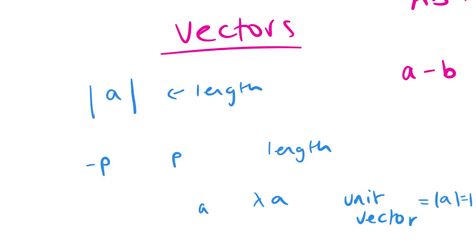The triangle law for addition: AB + BC gives us vector AC. When we subtract vectors, it's the same as adding the negative — so vector A minus vector B is A plus the negative of B. Adding opposite vectors gives a zero vector: vector AB plus vector BA equals zero. Multiplication and addition: if we have vectors (2, 1) and (3, 0), the dot product is 2×3 + 1×0 = 6. For addition, (2,1) + (3,0) = (5,1) — we just add the columns.